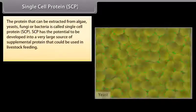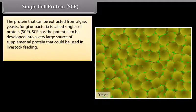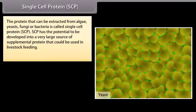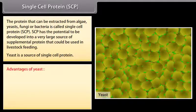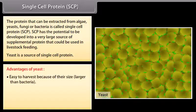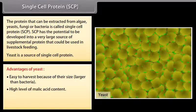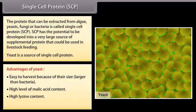Single cell protein (SCP): The protein that can be extracted from algae, yeasts, fungi, or bacteria is called single cell protein. SCP has the potential to be developed into a very large source of supplemental protein that could be used in livestock feeding. Yeast is a source of single cell protein. Advantages of yeast include: easy to harvest because of their larger size than bacteria, high level of malic acid content, high lysine content, and the ability to grow at acidic pH.